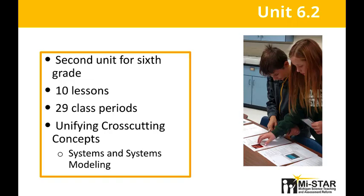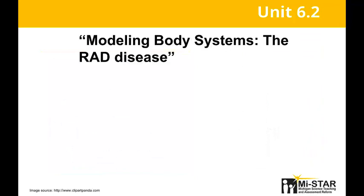Unit 6.2 is designed for the 6th grade and is the 2nd unit for the school year. It's comprised of 10 lessons, including the Lesson Opener and Unit Closer, requiring a minimum of 29 50-minute class periods. The semester unifying cross-cutting concept is Systems and Systems Modeling. The full title of Unit 6.2 is Modeling Body Systems: the RAD Disease.